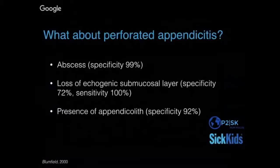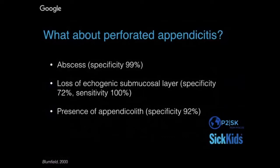Another area that makes the appendicitis scan challenging is that it could be perforated, in which case you may not see the appendix. Perforated appendicitis is more common in younger children under eight. Bloomfield et al. in 2000 highlighted features suggestive of perforated appendicitis: an abscess has a specificity of 99%, loss of the echogenic submucosal layer has a sensitivity of 100%, and the presence of an appendicolith has a specificity of 92%.